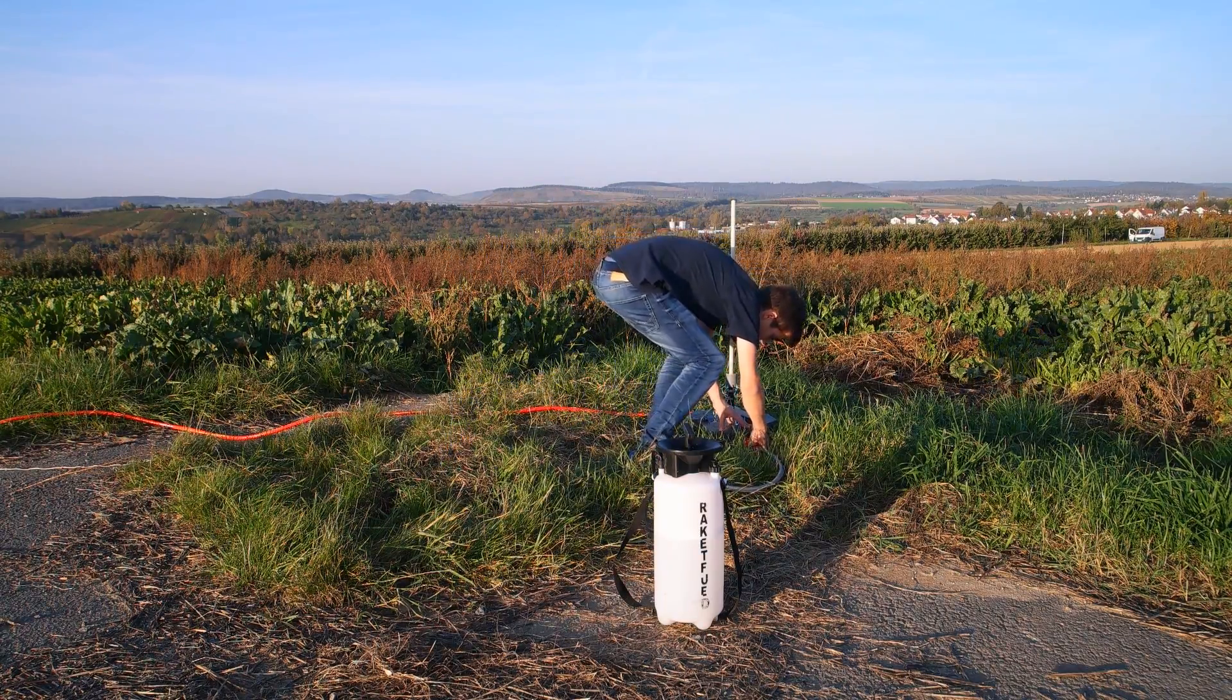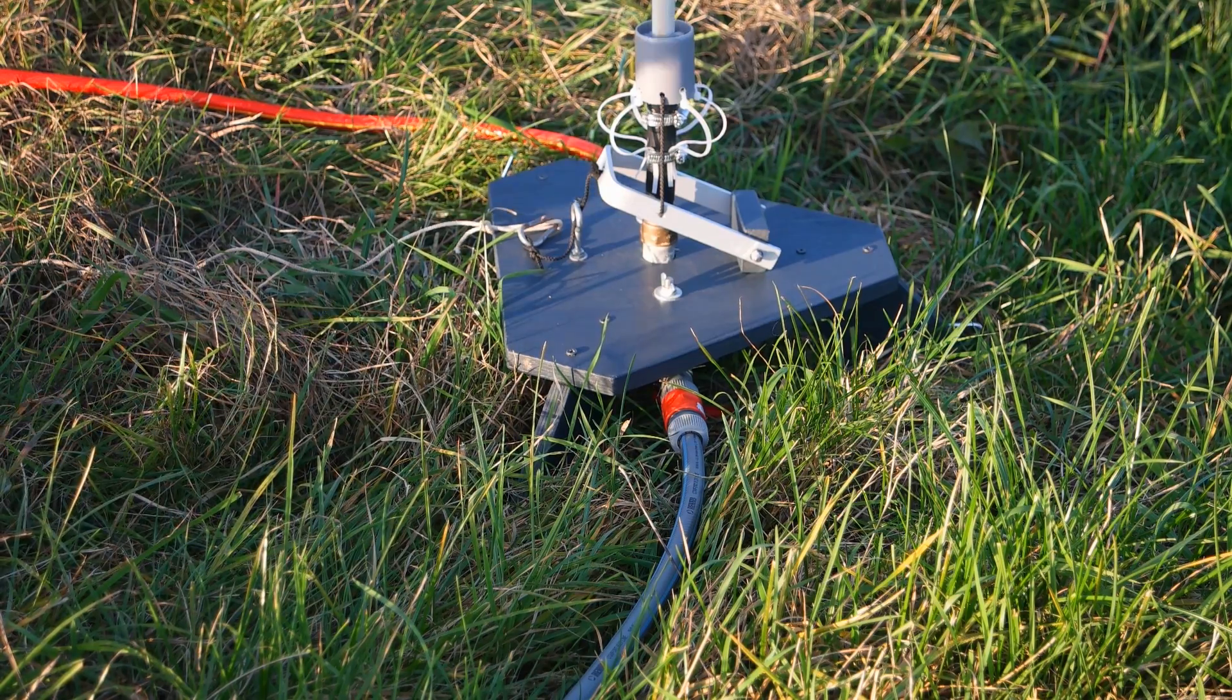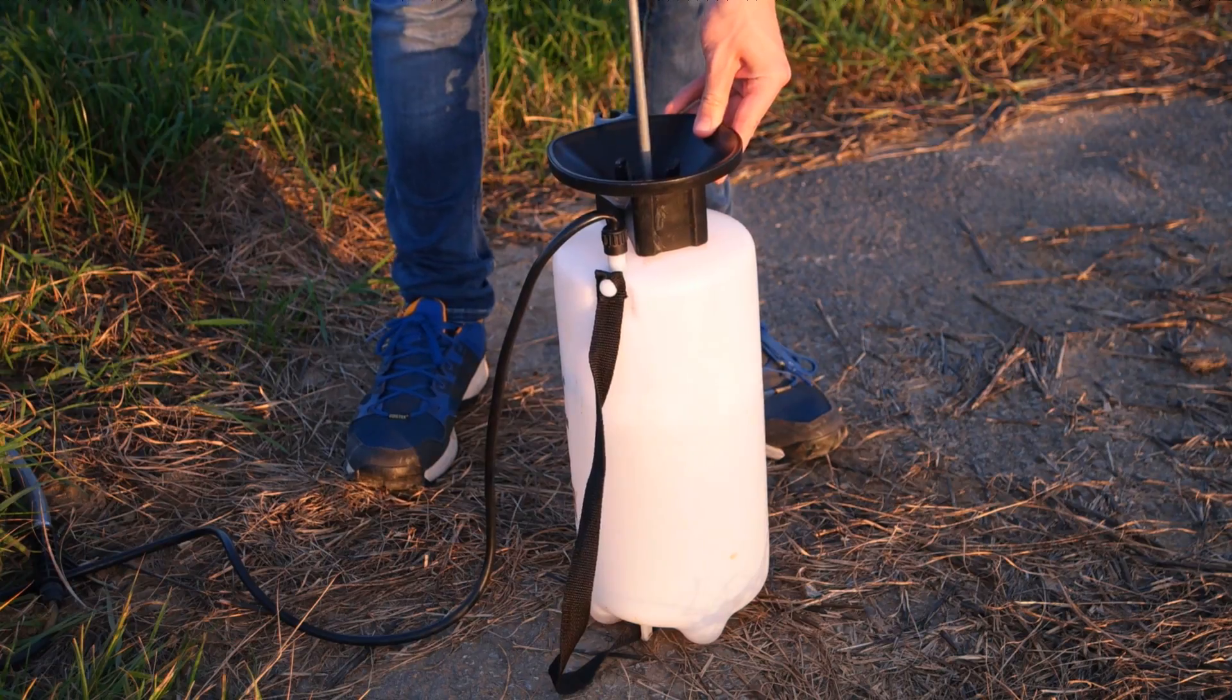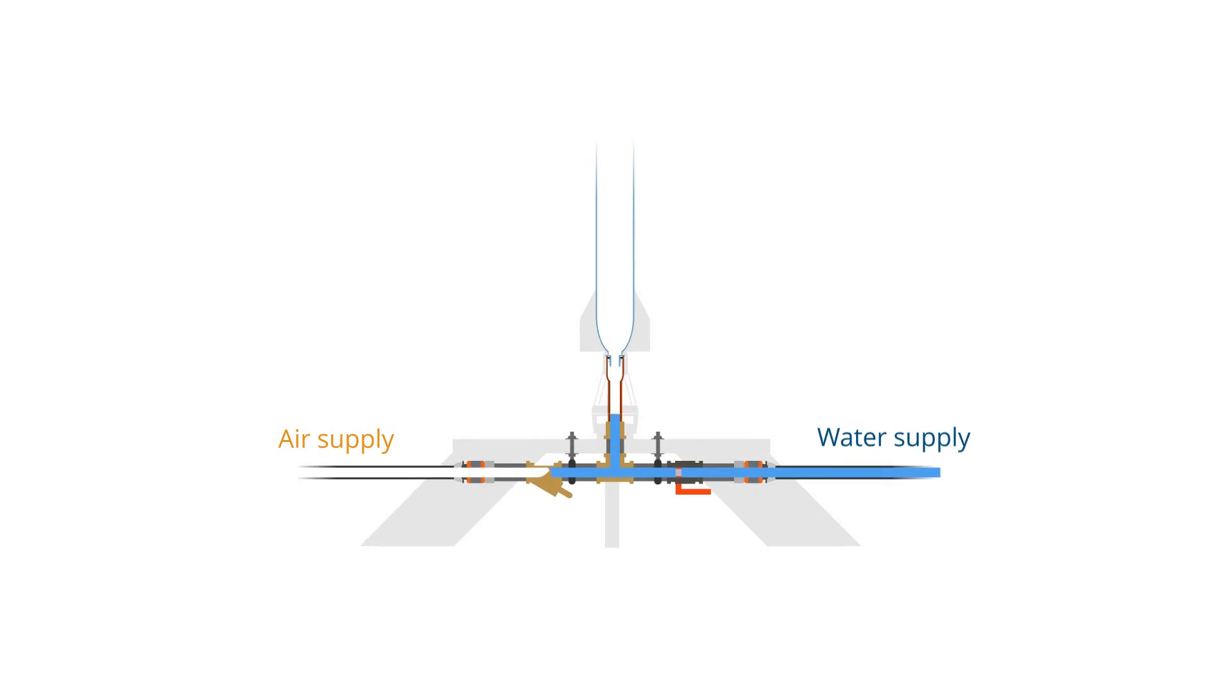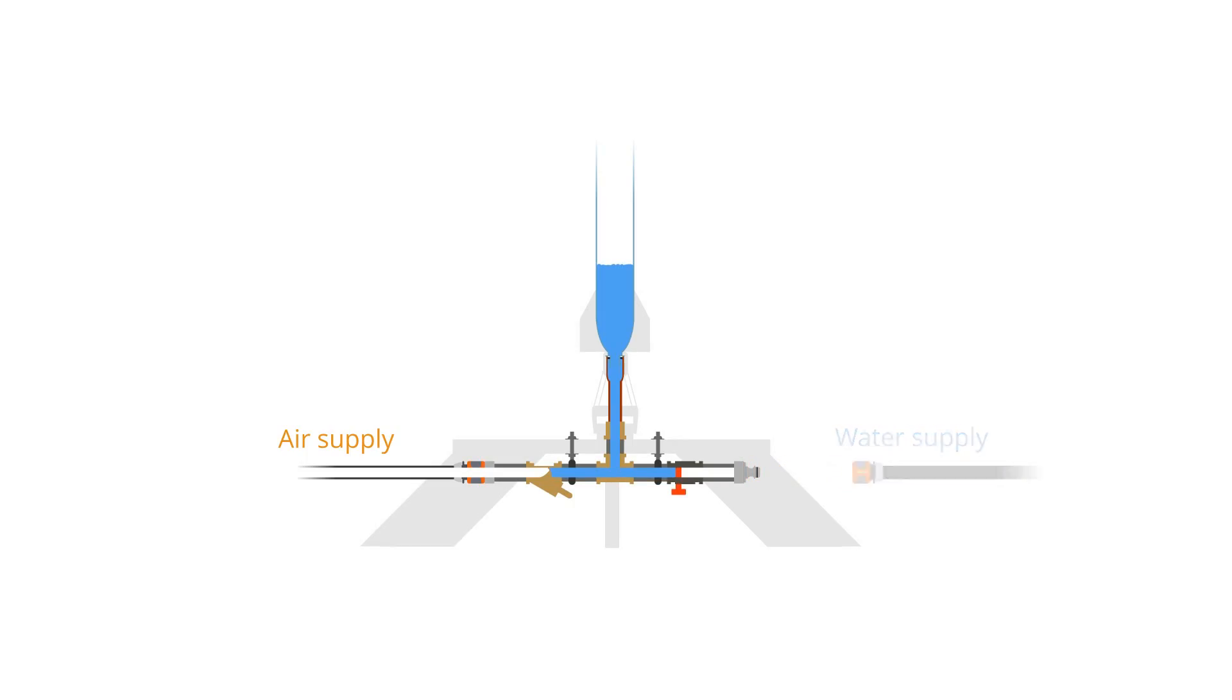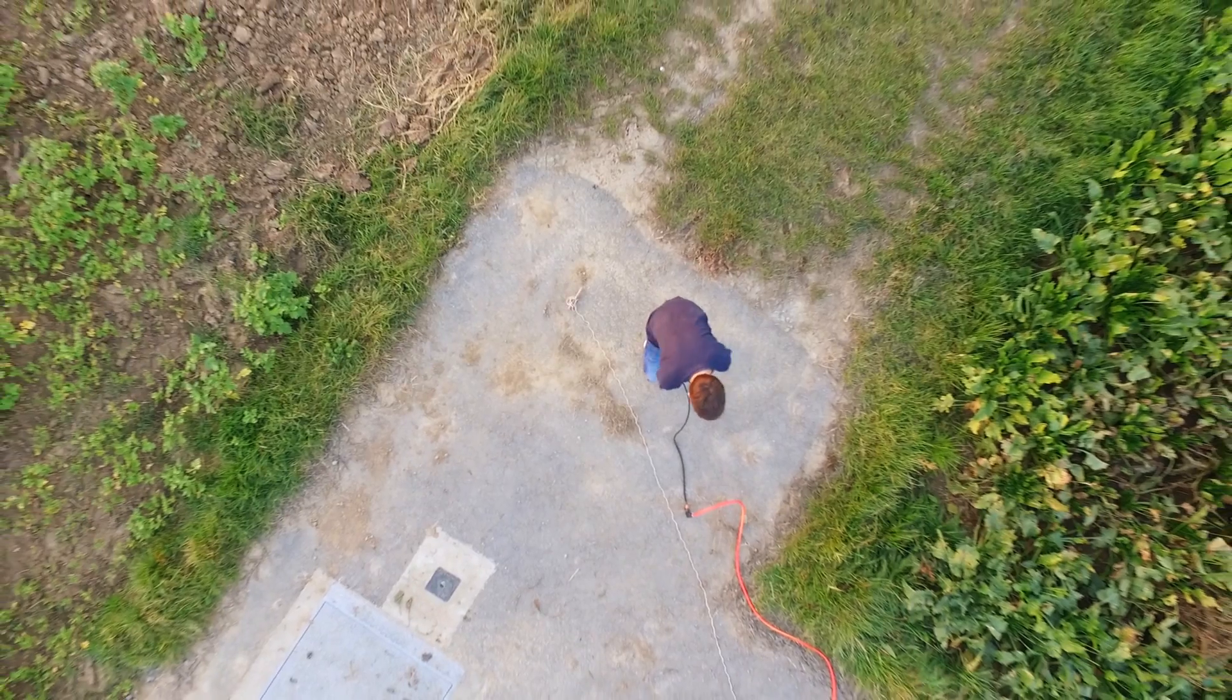To use your filling system, simply fill water into the pressure sprayer and build up pressure using the integrated pump. Then open the valve of your launch pad and the water will flow into the rocket. It is very important that you fill the water into the rocket before you build up pressure with the air pump.